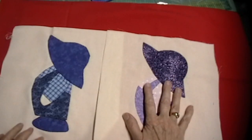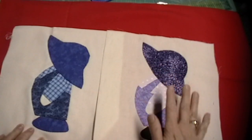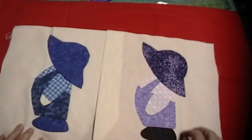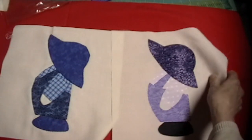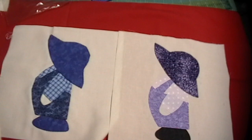This is the fastest, if you're a beginning quilter. This is the fastest and the easiest way to applique. If you want to make an Overall Sam or a Sun Bonnet Sue, the first thing that you need is a pattern.